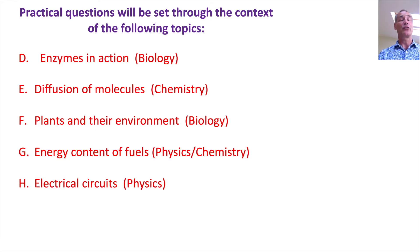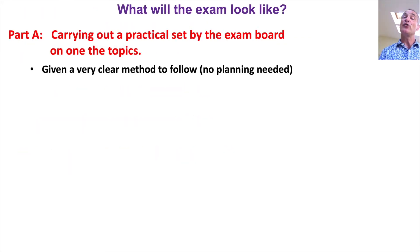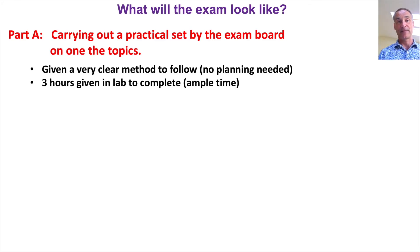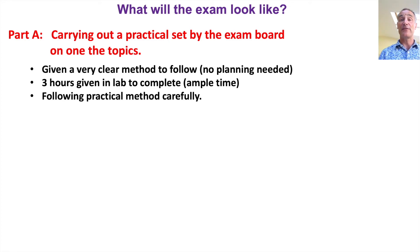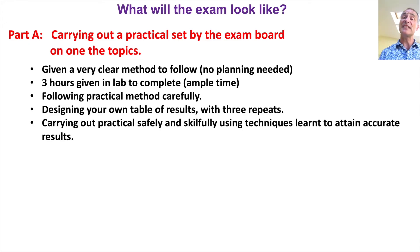Before we go on, it's really important to understand what the exam will actually look like, because that gives you a good idea about why you're using all these things. First, you'll carry out a Part A, which is a practical exam set by the exam board, on one of those topics. You're given a very clear method to follow, so there's no planning needed. You're given three hours in lab time maximum in one go, but actually you won't need three hours. You'll have to follow the method really carefully — it is in great detail to make sure everything is included. You'll have to design your own table of results with three repeat readings, and carry out the practicals safely and skilfully using techniques learned to obtain accurate results.